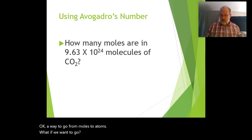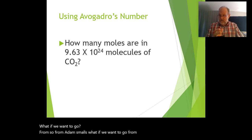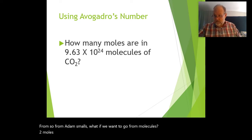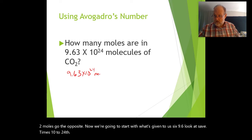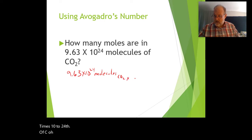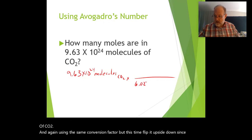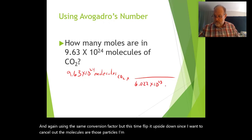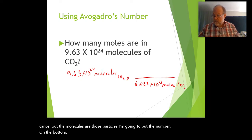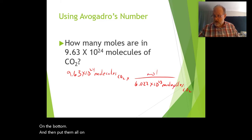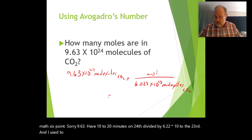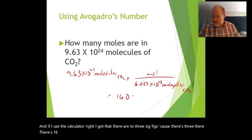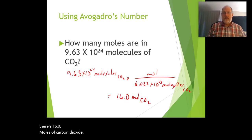What if we want to go the other way — from molecules to moles? Now we start with what's given: 9.63 × 10²⁴ molecules of CO₂. Using the same conversion factor but flipped upside down, I put Avogadro's number on the bottom and moles on top so molecules cancel. Doing the math — 9.63 × 10²⁴ divided by 6.022 × 10²³ — I get, to three significant figures, 16.0 moles of carbon dioxide.